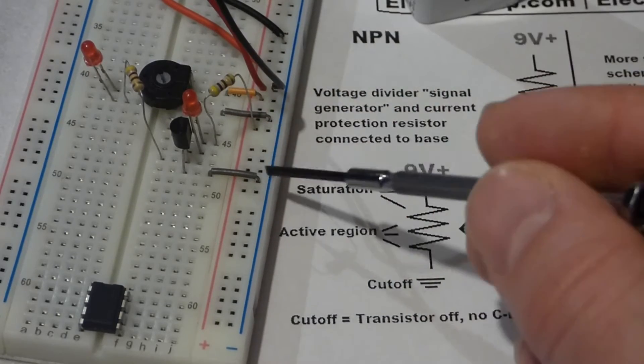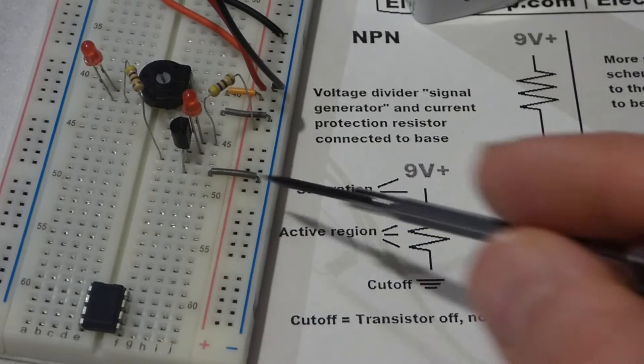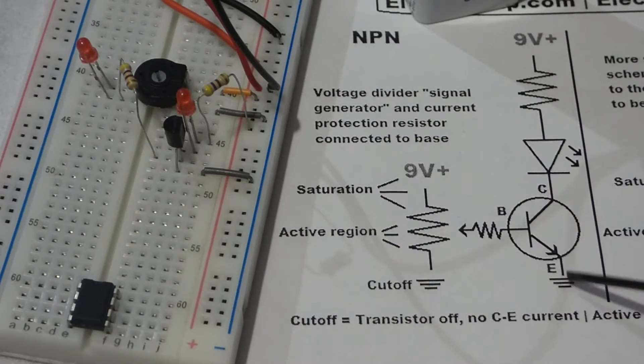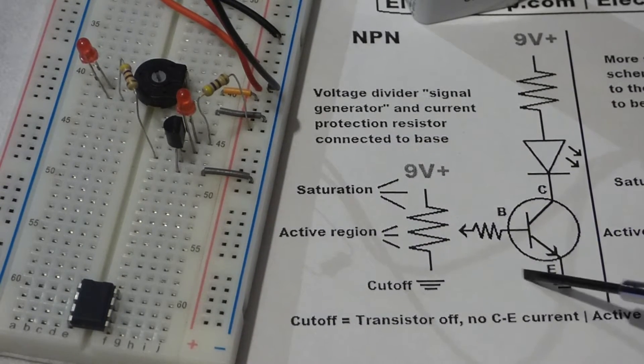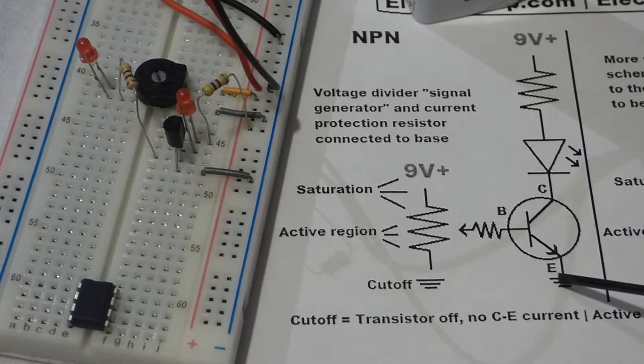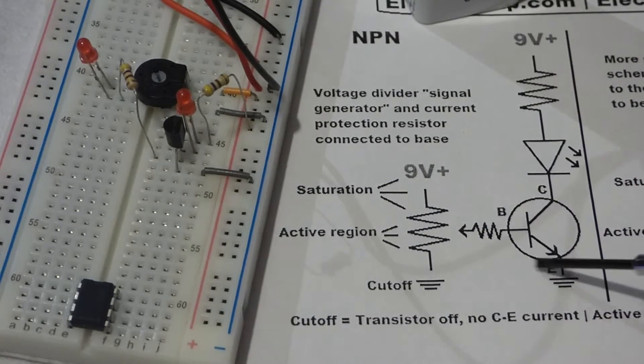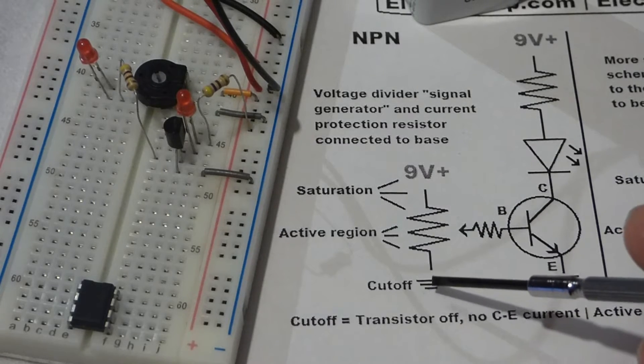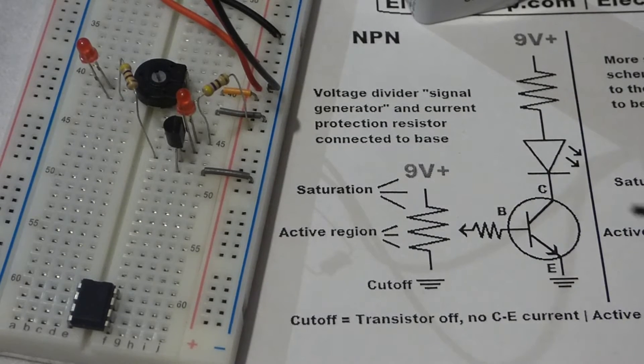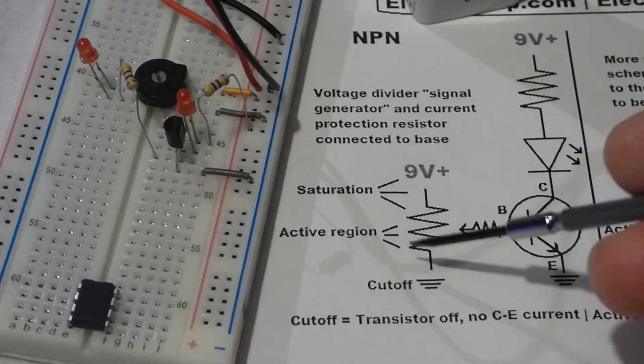So they're at the same voltage—we consider that zero volts, the ground in this case. There's zero volt potential difference, so no current's going to flow. That's the cutoff range. Now we're going to move up to the active region, so I'll just take the trim pot and slowly turn it more towards positive.